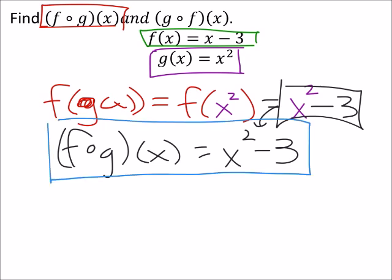Alright, let's look at the next one. So, that's g of f of x. And this one would be g of f of x, which is x minus 3. Sorry. x minus 3, like this.